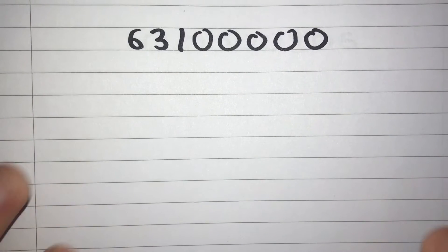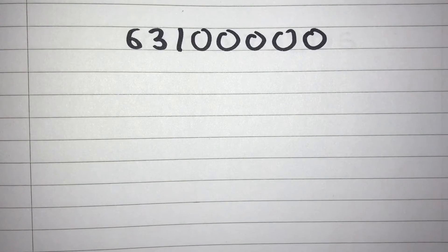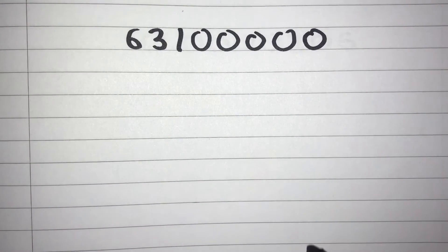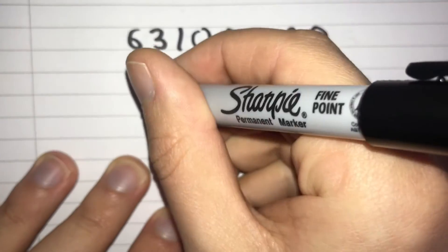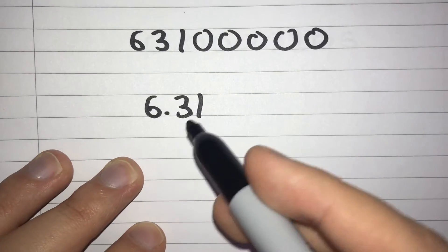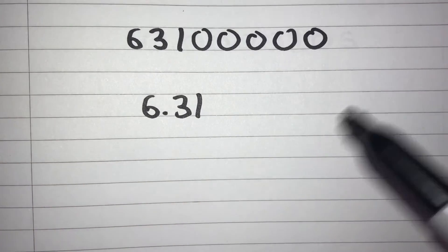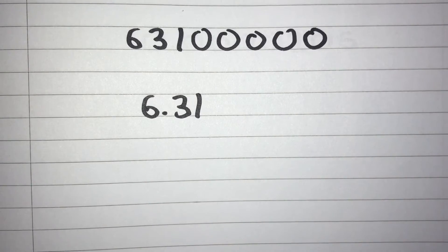Let's try it with a different example. We've got another big number and again we want to get a number between 1 and 10. We just put our decimal point after our first significant figure — that's going to be after this 6 — so we get 6.31. We'd still have all these zeros but after the decimal point they're not going to do anything, so we just leave them out and write 6.31.